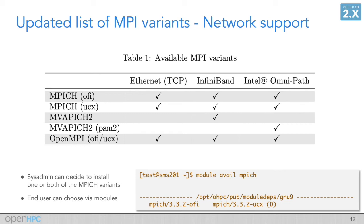With MPICH, we now have builds against both LibFabric and UCX. The same thing is true of OpenMPI, although that's one large monolithic build. So in the case of MPICH, a system administrator can decide to install either one or both of the MPICH variants.